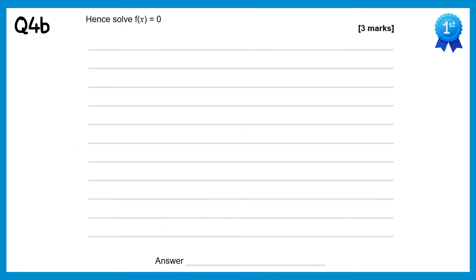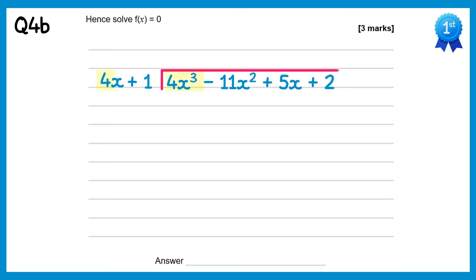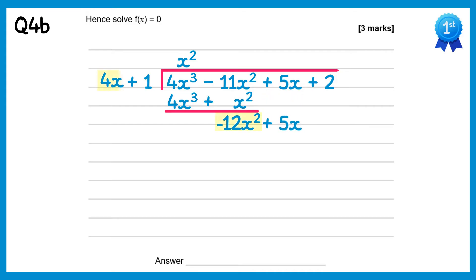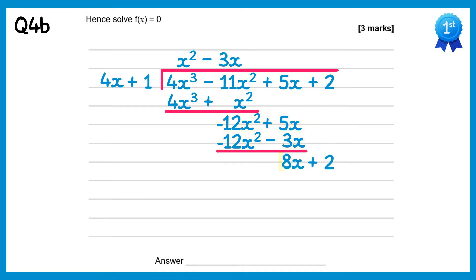For part b we need to solve f of x equals 0, so we need to fully factorise it. We'll take the polynomial and divide it by the factor we have. 4x cubed divided by 4x is x squared. Multiply back through: you get 4x cubed plus x squared. Then subtract — 4x cubes cancel and negative 11x squared take away x squared is negative 12x squared. Bring down the next term and do negative 12x squared divided by 4x, which gives negative 3x. Multiply back: negative 12x squared take away 3x. Subtract — the negative 12x squareds cancel and 5x take away negative 3x gives 8x. Bring down the final term. 8x divided by 4x is plus 2. Multiply back through to get 8x plus 2, which when you subtract gives 0.